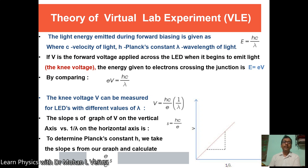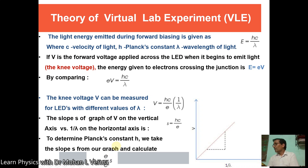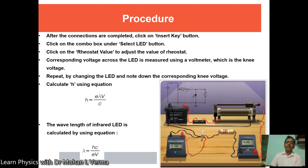From eV = hc/λ, one can calculate V: V = (hc/e) × (1/λ). So if we have a plot between V and 1/λ, the slope S is equal to hc/e. To calculate h, we use h = (e/c) × S. This formula is used to determine Planck's constant h.